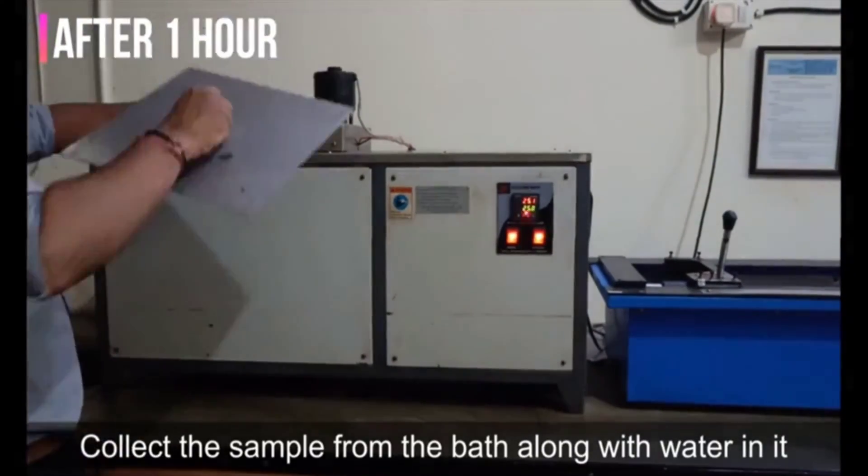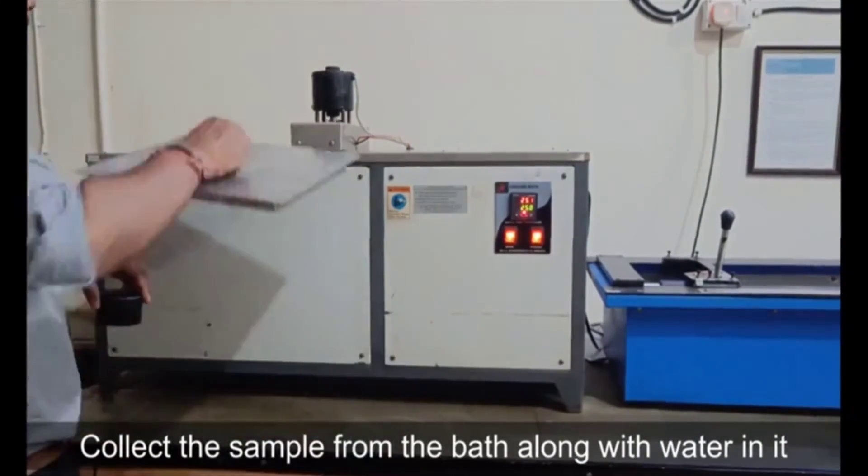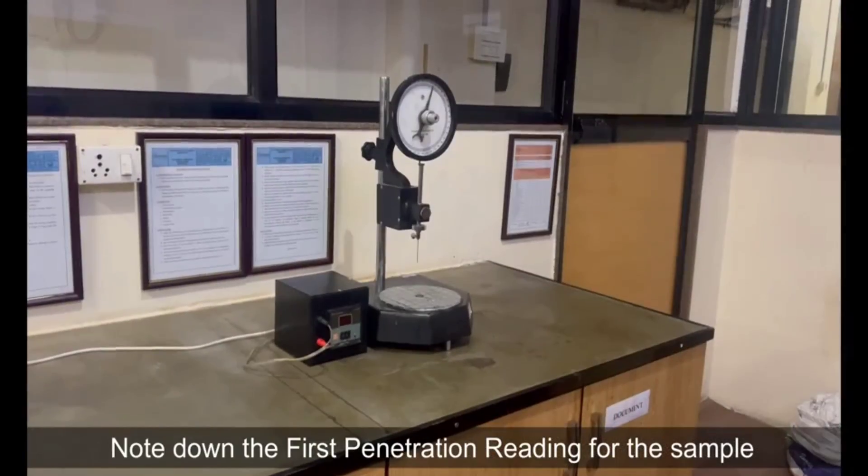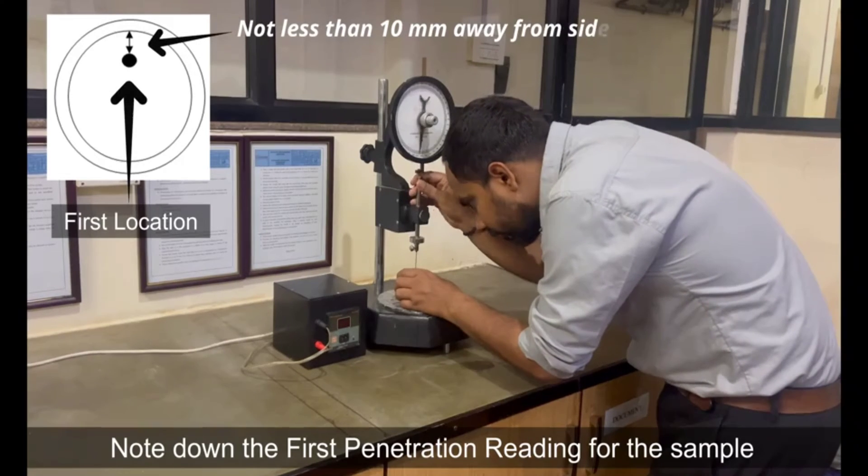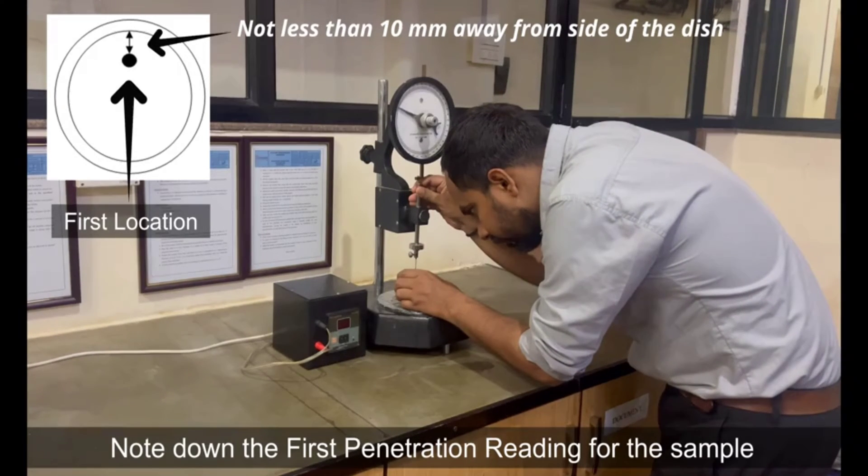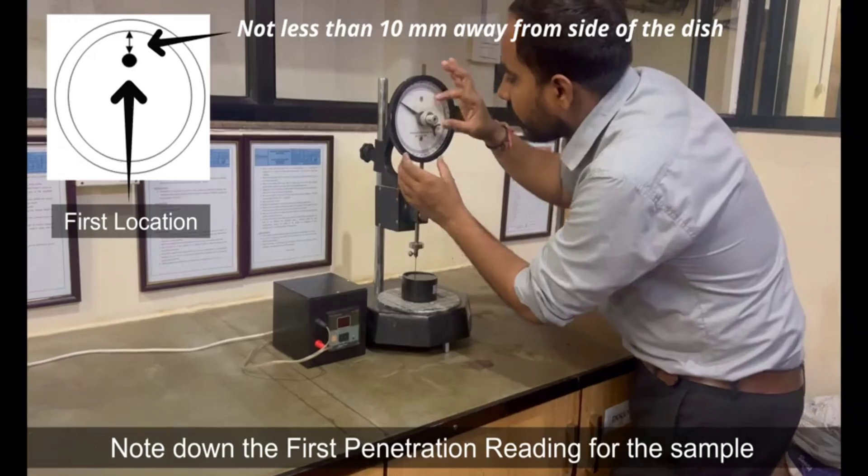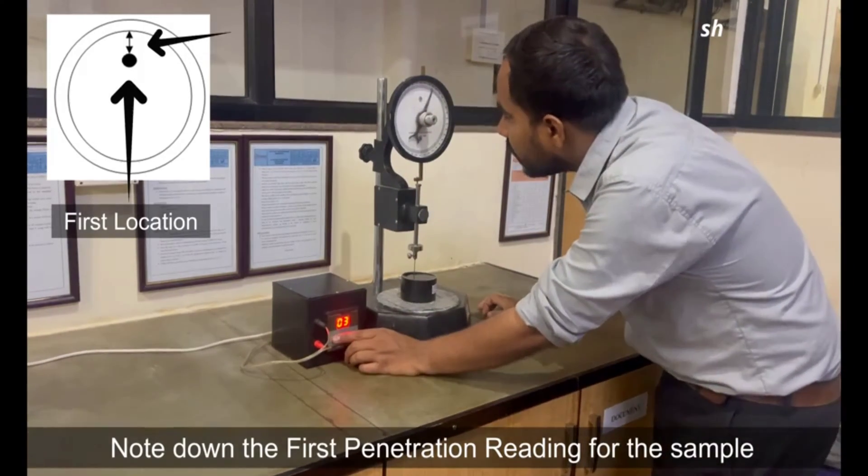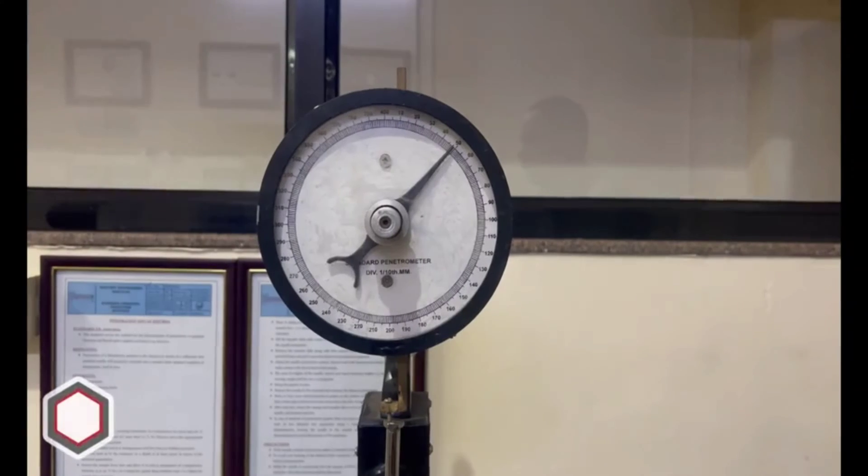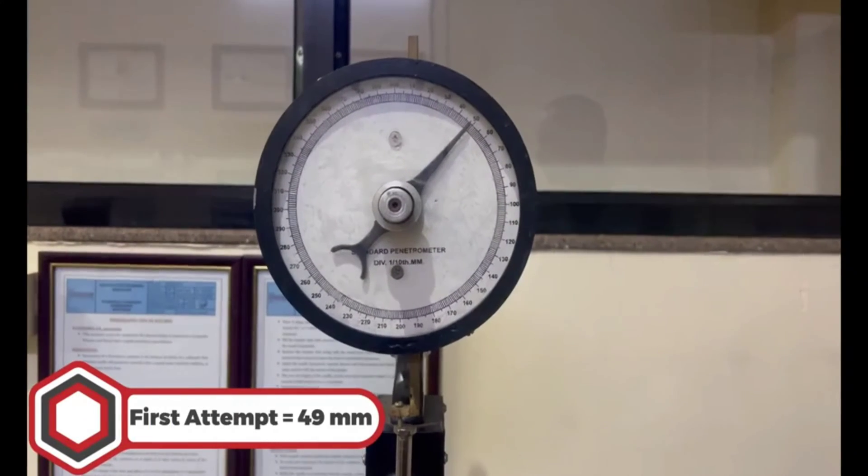After one hour, collect the sample from bath along with water in it. Note down the first penetration reading for the sample. First location not less than 10 mm away from side of the dish. Set the dial gauge and release the penetration needle for 5 seconds. First attempt is 49 mm.